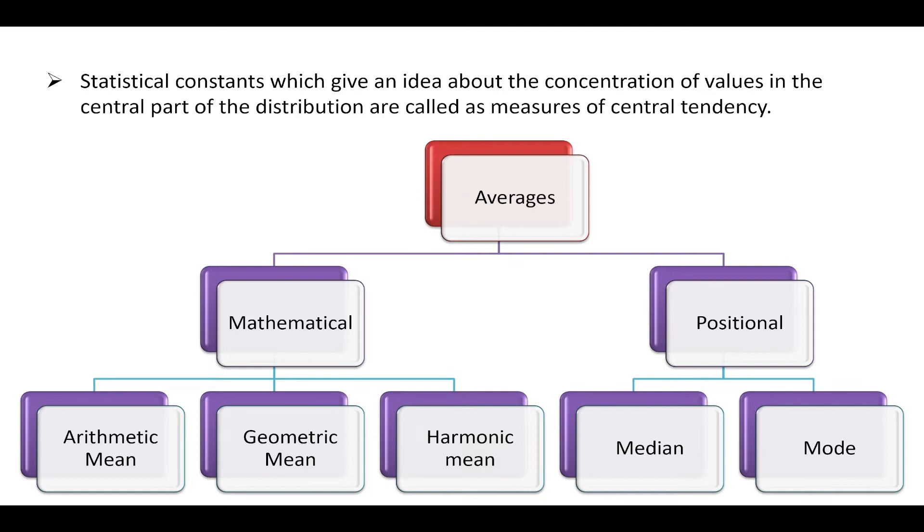The five most commonly used measures of central tendency are arithmetic mean, geometric mean, harmonic mean, median, and mode.